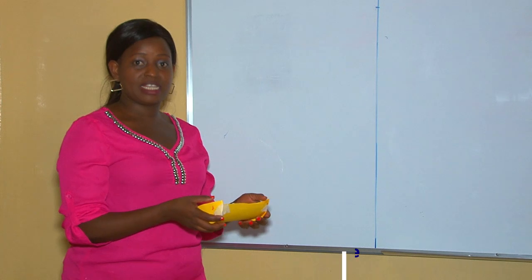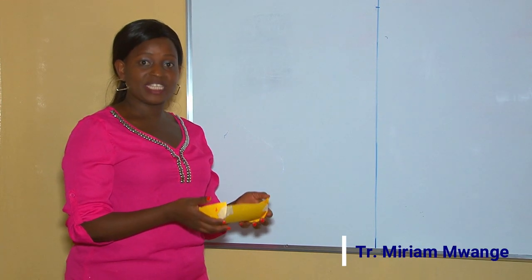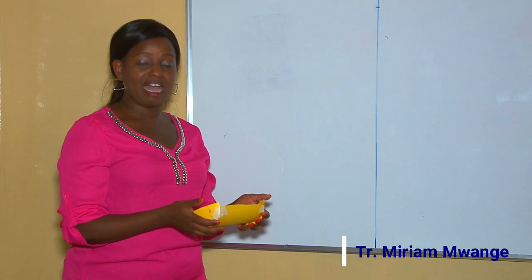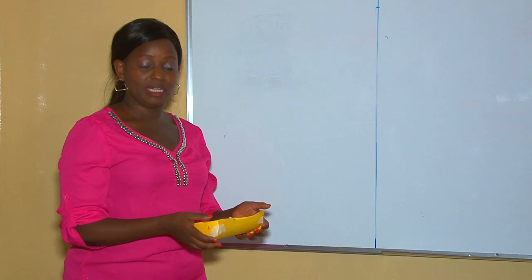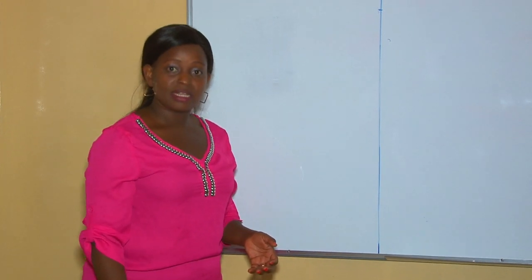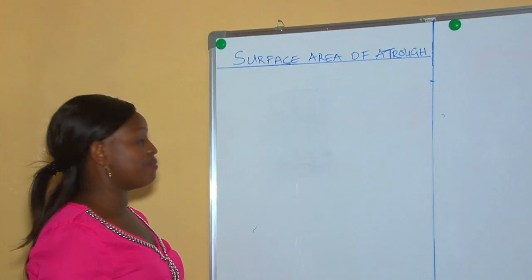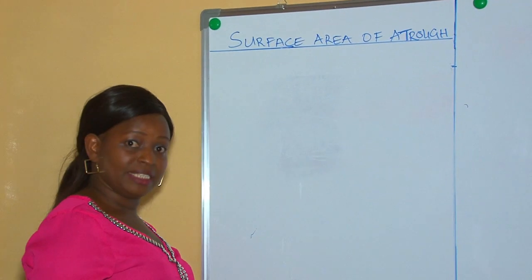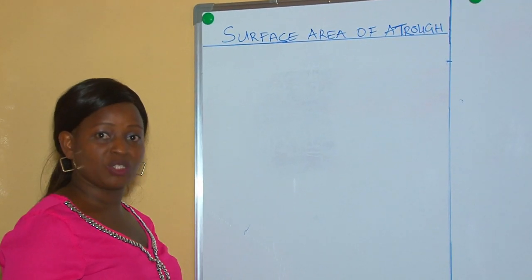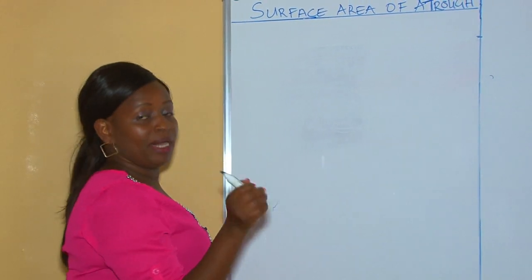So how do we get the surface area of a trough? A trough is basically just a half of a cylinder. We know how to get the surface area of a cylinder, therefore if we know how to get the surface area of a cylinder, it is very easy for us to get the surface area of a trough.